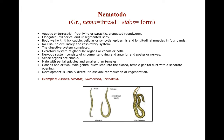First I'm going to discuss Nematoda. Nema means thread and eury means form, so they are thread-form-like animals. They may be aquatic or terrestrial, free-living or parasitic. They are elongated roundworms — their body is elongated, unsegmented, with no segmentation, and body shape is cylindrical. Body wall has a thick cuticle and cellular or syncytial epidermis, with longitudinal muscles in four bands.